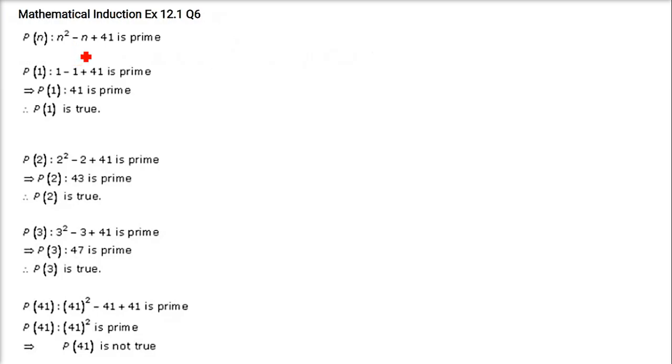Next, if P(n) is the statement n² minus n plus 41 is prime. We have to prove that P(1), P(2), P(3) are true. So just put the value. Put 1, it comes 41, it is a prime. Prime number is those numbers which are divisible by 1 or themselves. No other number can divide them. You put 2, you get 43 which is a prime. You put 3, you get 47 which is a prime.